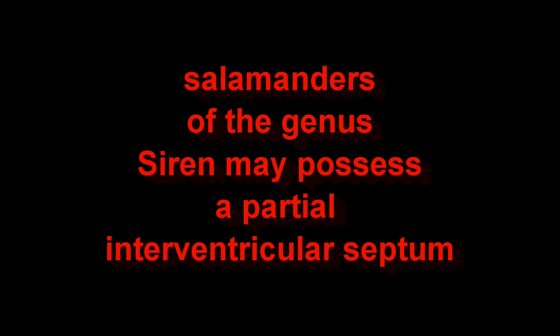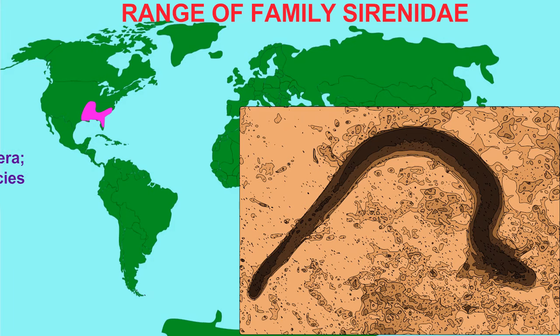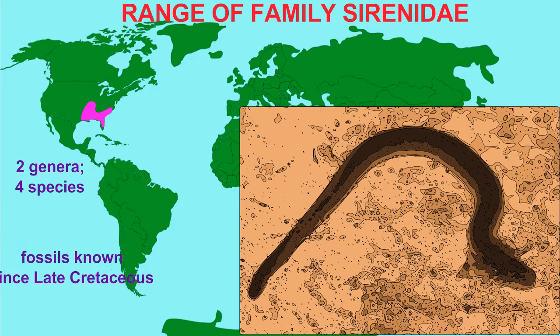Finally, salamanders of the genus Siren may possess a partial interventricular septum, which may make them more adept at separating their oxygenated and deoxygenated blood.